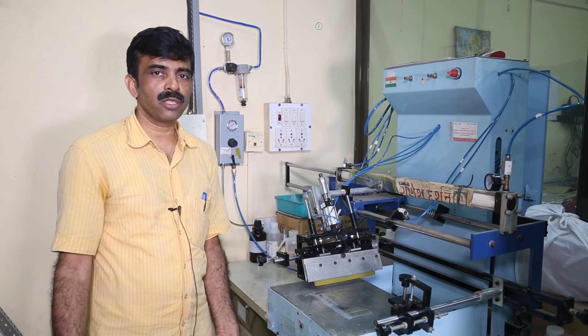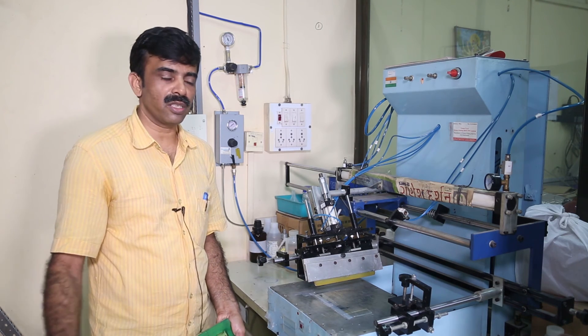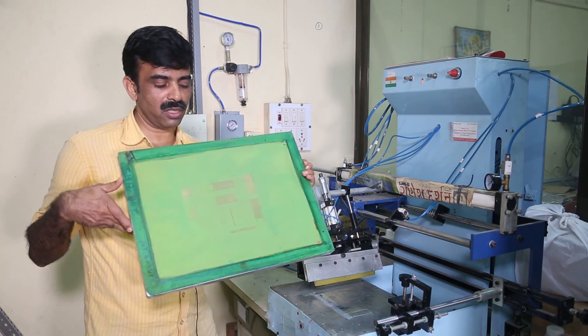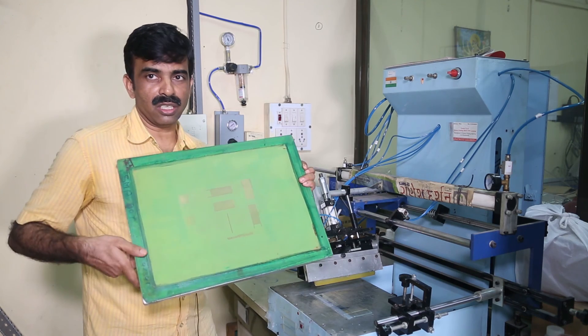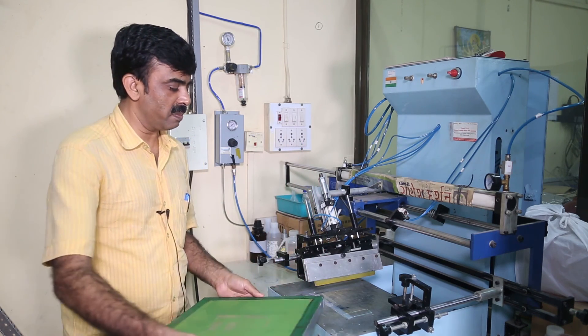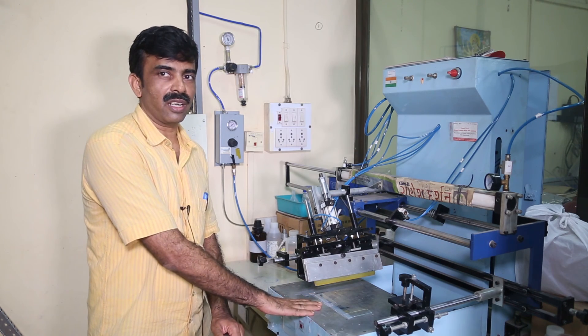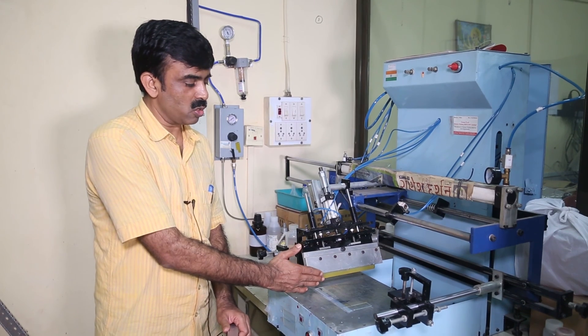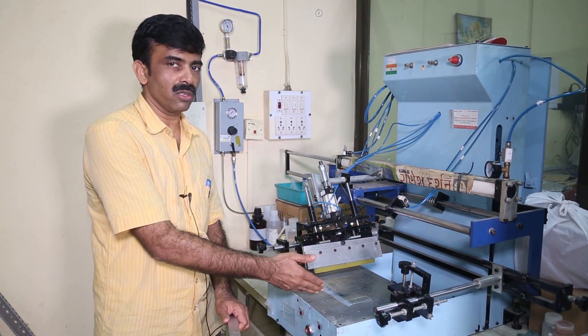For trials in the lab for this project, we use this simple machine. This is the screen printer that we have and here is what a screen looks like. You can see that there are some patterns through which we print our silver paste. This screen is placed in a frame in the machine and here is where the substrate is held on which we are printing our silver paste. And this particular thing is the squeegee which through its motion eventually prints the pattern on the substrate.